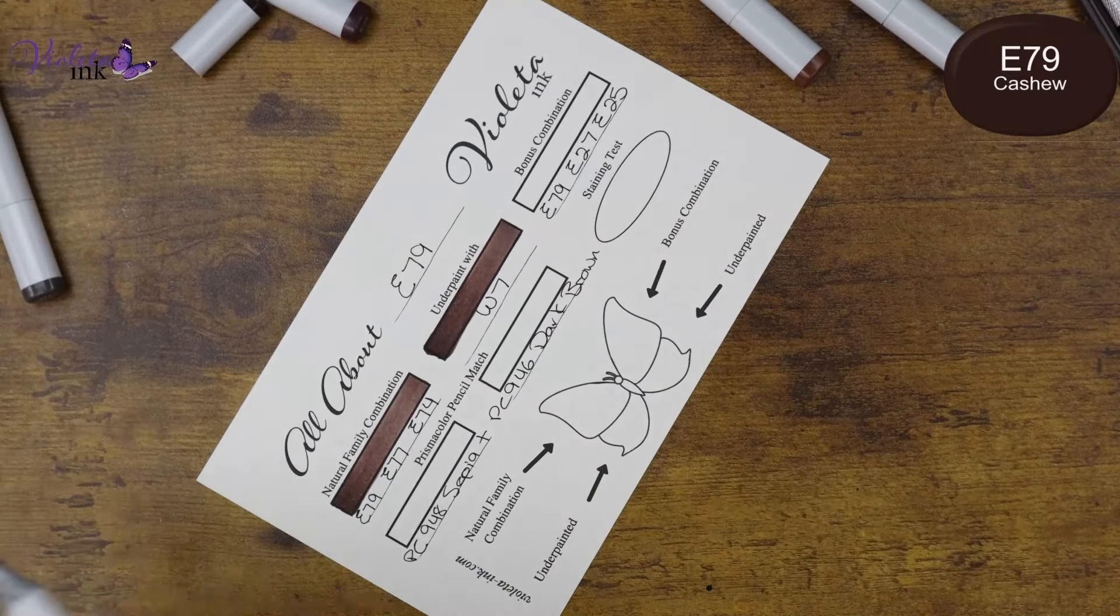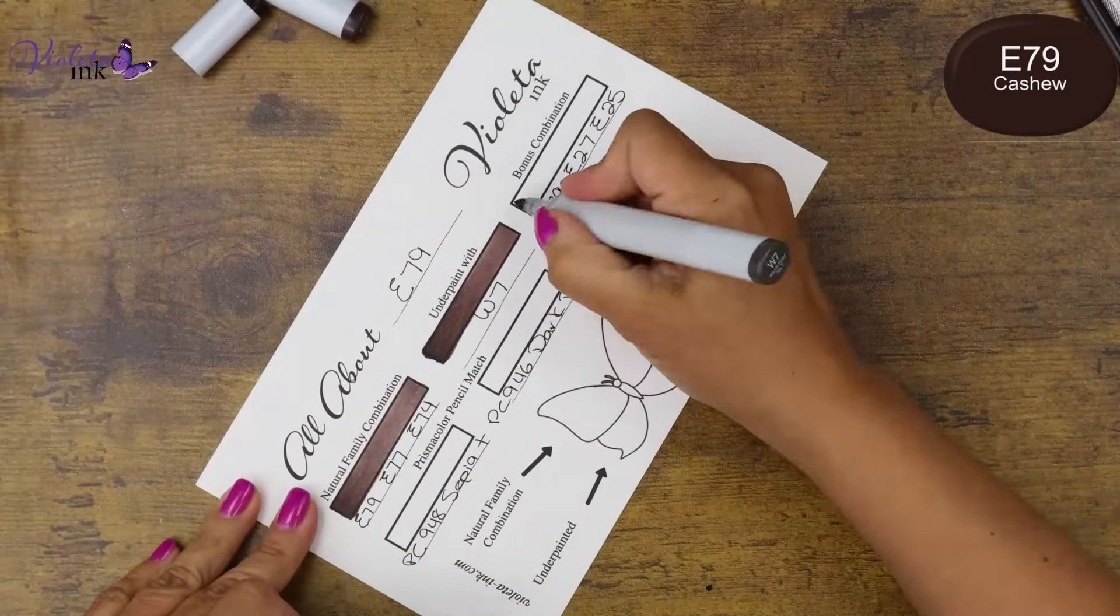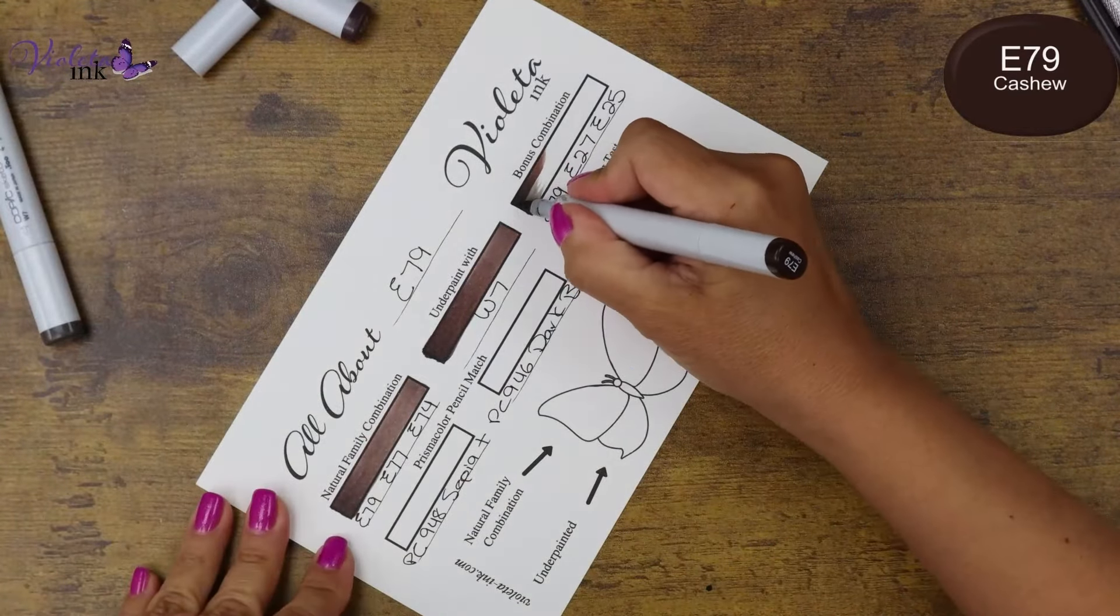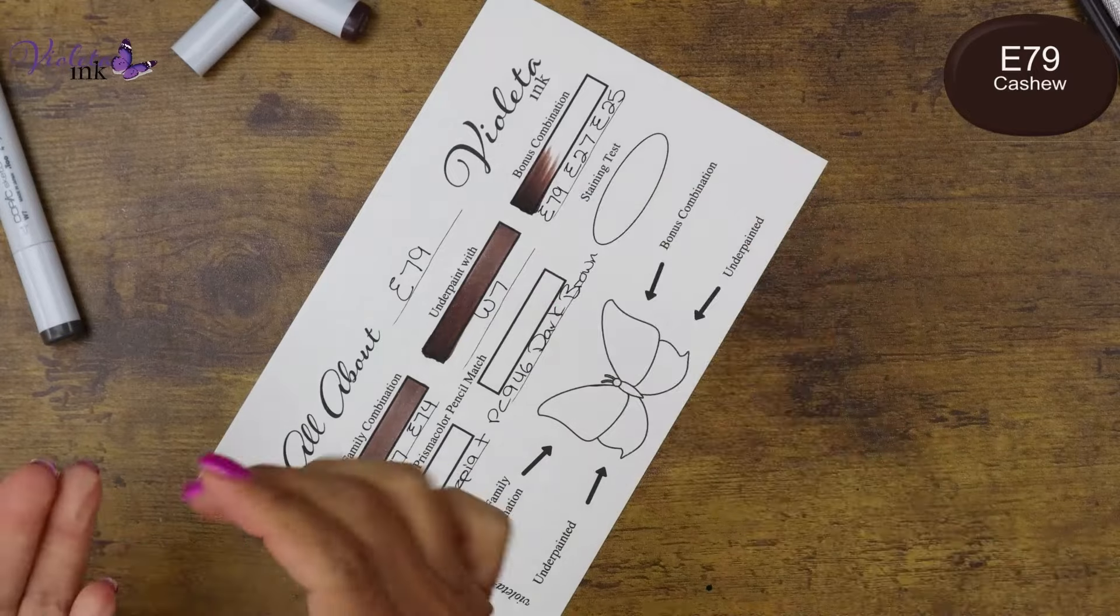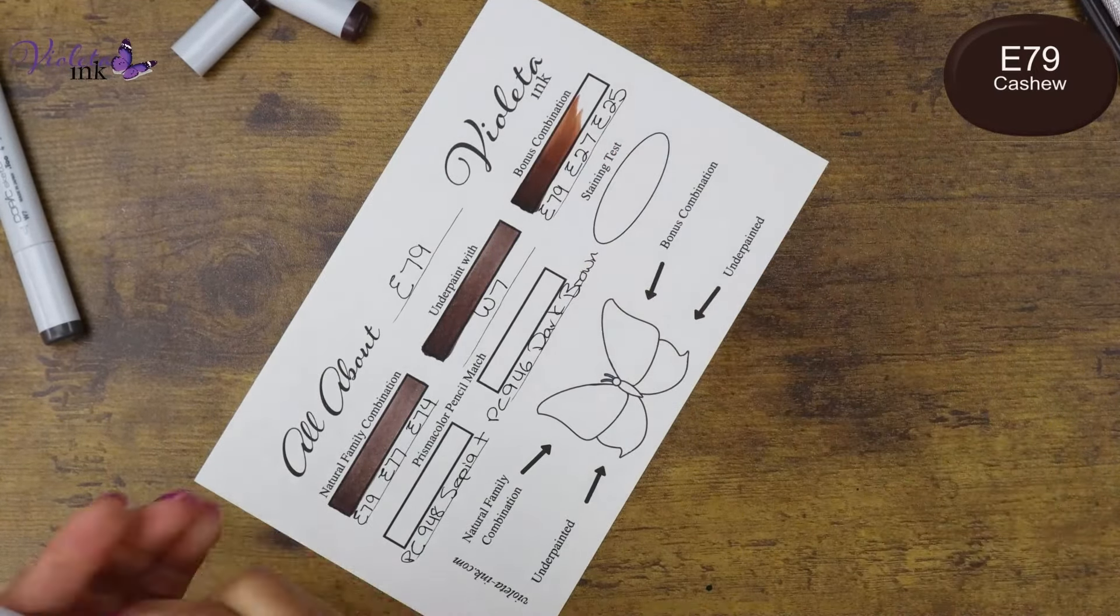For the bonus combination I wanted more of a chocolate kind of color. So I'm underpainting with W7. On top E79, E27 and then E25.